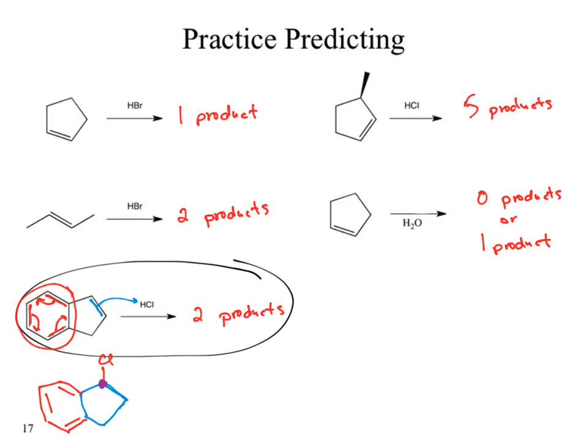That is a chiral carbon, which means as drawn it's incorrect - we need to specify that extra information. When we acknowledge how that last bond formed, the chlorine attacked a carbocation. The carbocation has an empty p orbital above and below, which means the chlorine could come in wedged or dashed - so I get two products. The same thing is happening with the question above it. For a test, it's the ACS exam, which is all multiple choice. You could get a question asking how many products are produced.